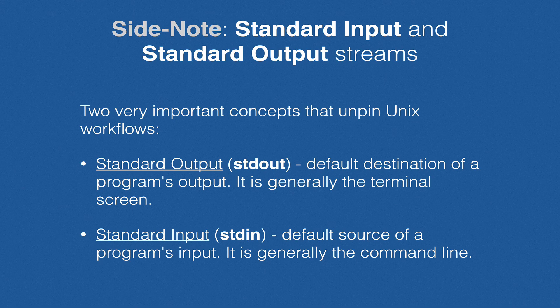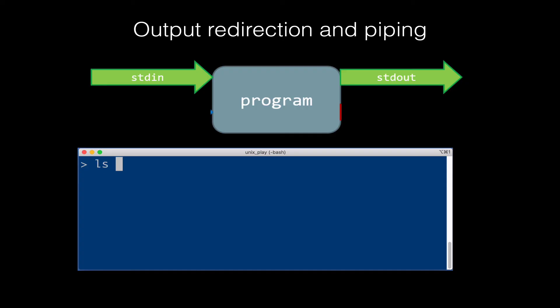For example, if we type ls and tell it a directory we want to list, like our desktop, it takes that as input from the command line — that's the standard input. This is shown graphically where we have our program in the middle, ls, and we give it some input on standard in — the desktop path. Standard output comes right back to the screen, to the terminal itself.